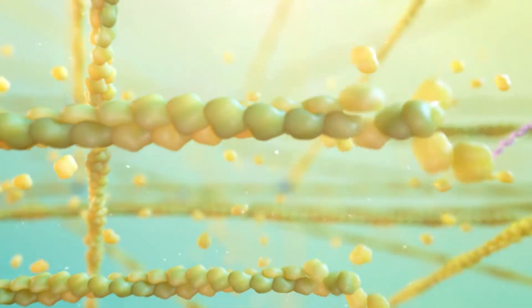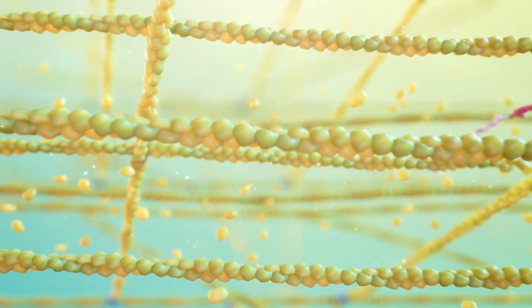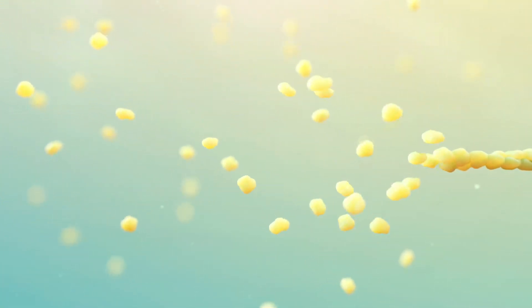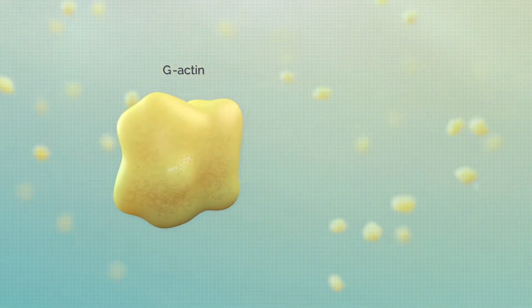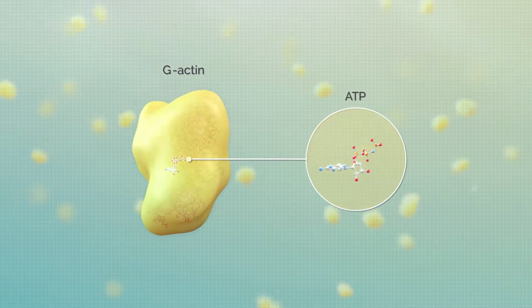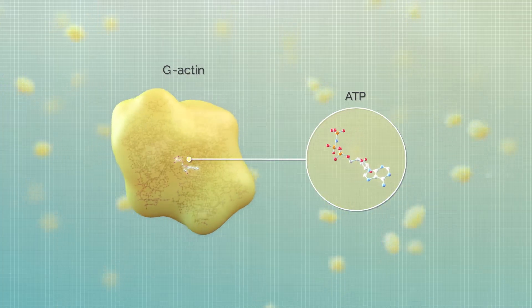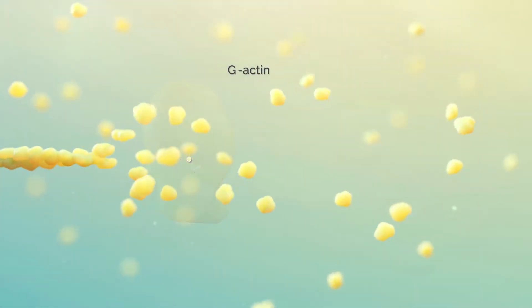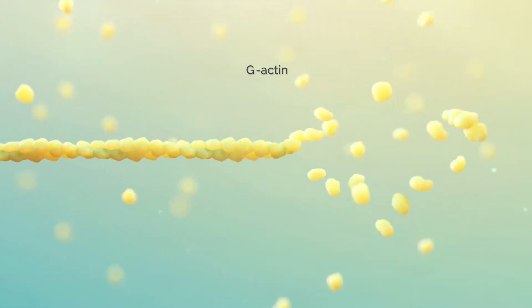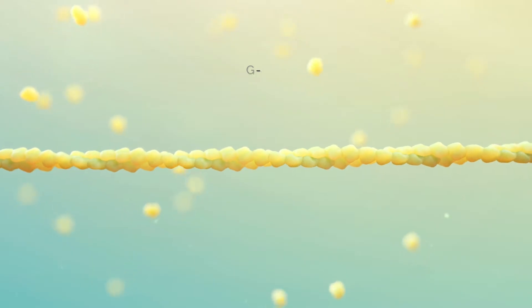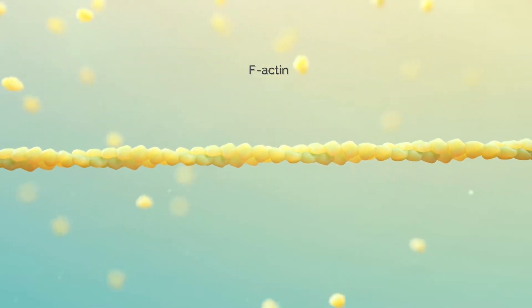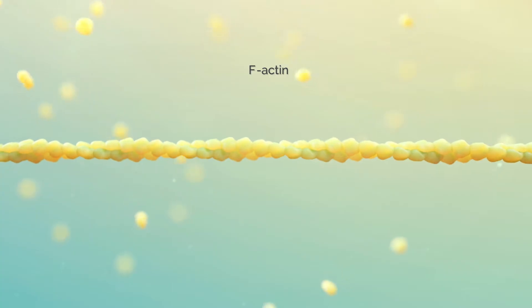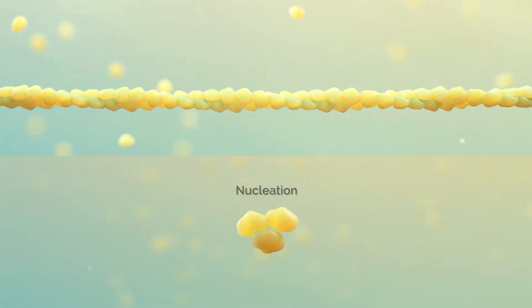The building block of the actin cytoskeleton is a small globular protein called G actin, which is normally bound to ATP as a monomer. These ATP-bound G actin monomers assemble, or polymerize, into filaments known as F actin over three phases called nucleation, elongation, and steady state.